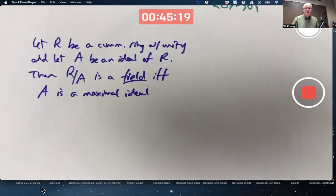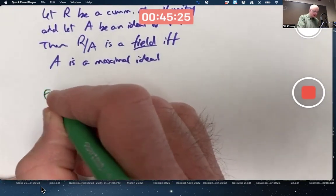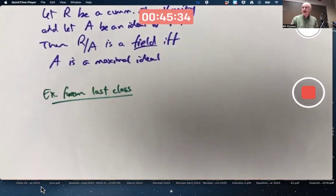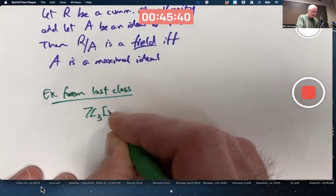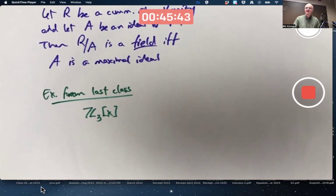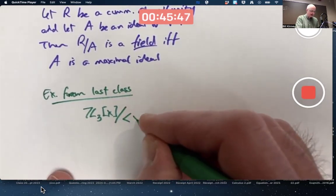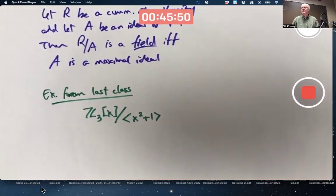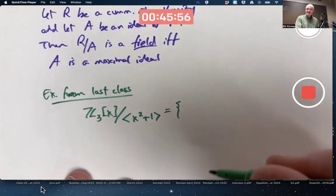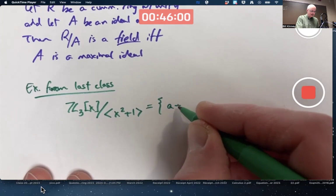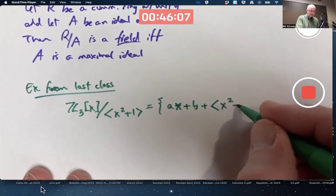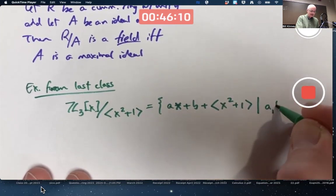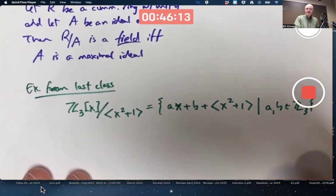Let's bring it back to an example from last Friday. An example from last class, at the end of the last class, we found that if you take the polynomial ring Z3[x] and mod by the principal ideal generated by x squared plus 1, we saw last week that as a set, we could write this as all linear polynomials plus the ideal as A and B varied over Z3. Remember that?